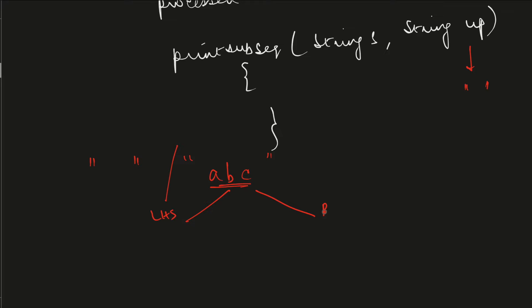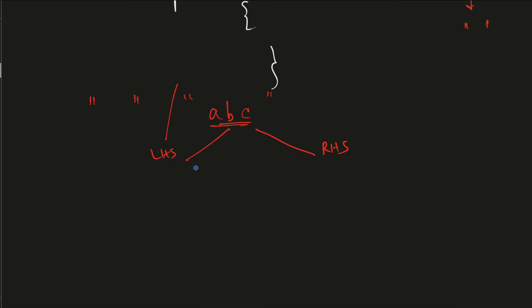We are going to make two recursive calls — one we consider the LHS and one the RHS. In each call, we divide into two parts: the processed string and the unprocessed string. On the LHS we pick the first character 'a', put it into the unprocessed string, and are left with 'bc' as the processed string. On the RHS we don't pick 'a', keeping the unprocessed string empty and 'bc' as the processed string.